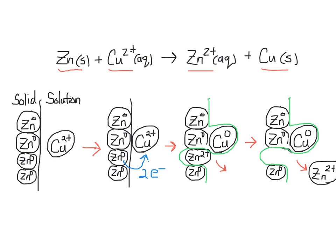What I've drawn below is maybe what we could call a mechanism for this reaction. In this mechanism, I'm showing that a solid chunk of zinc is getting dropped into a solution of copper 2+. So the copper 2+ ions are diffusing around in solution, and then they could bump into the surface.